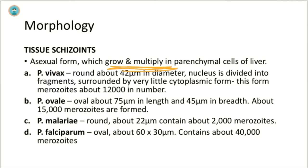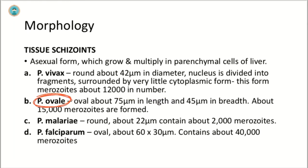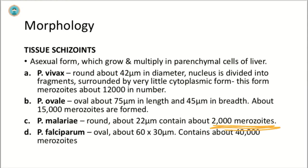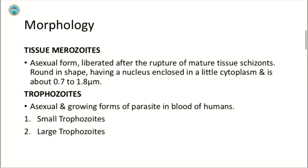The next stage is the tissue schizont, an asexual form that grows and multiplies in parenchymal cells of the liver. Different forms give rise to different tissue schizonts. For P. vivax: round, 42 micrometers in diameter, forming 12,000 merozoites. For P. ovale: oval, 75 micrometers long by 45 micrometers in breadth, forming about 15,000 merozoites. For P. malariae: round, about 22 micrometers, forming about 2,000 merozoites. For P. falciparum: oval, 16–30 micrometers, forming about 40,000 merozoites.